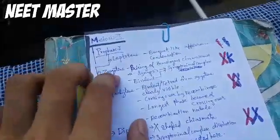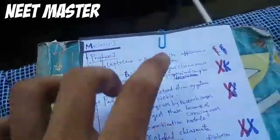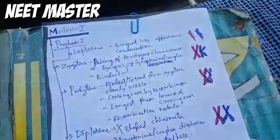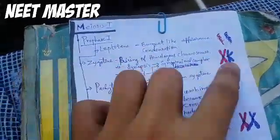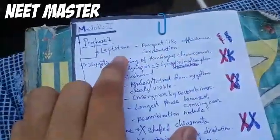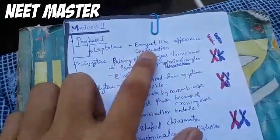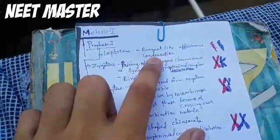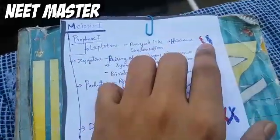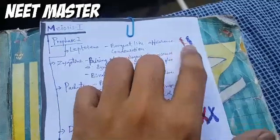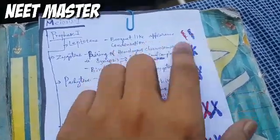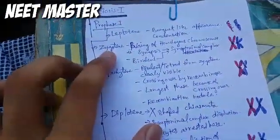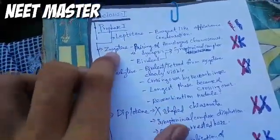Let's take a look at Pro Phase 1. The first stage is Leptotene. Leptotene involves condensation of chromosomes. Leptotene leads into Zygotene.